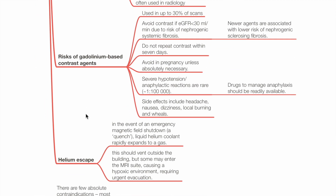Risk of gadolinium-based contrast agents: these agents are used in up to 30% of scans. Avoid if eGFR is less than 30 mL/min due to risk of nephrogenic systemic fibrosis. Newer agents are associated with lower risk. Do not repeat contrast within 7 days. Avoid in pregnancy unless absolutely necessary. Anaphylaxis is rare but drugs to manage it should be readily available.